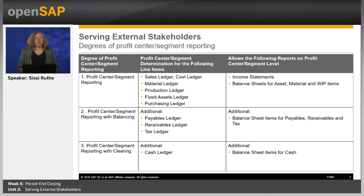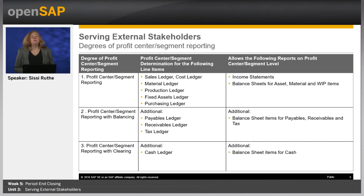The second degree, called profit center segment reporting with balancing, splits receivables, payables and tax items according to the offset information of profit center and segment. Additional line items are created, allowing you to report on additional balance sheet items — receivables, payables and tax by profit center. The third degree, called profit center segment reporting with clearing, splits cash according to the offset receivables and payables information of profit center and segment. The split is done during payment clearing, and additional line items are created. This allows you to create complete balance sheets for your profit centers and segments. The higher the degree of reporting, the more reporting capabilities you have, but the additional line items make the journal entries more complex.